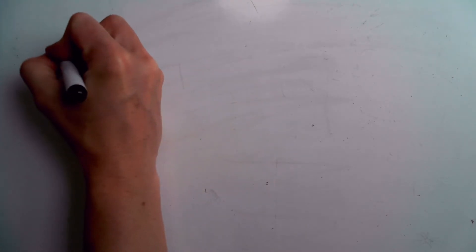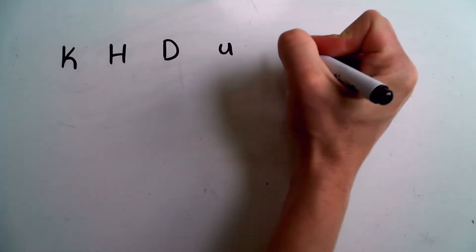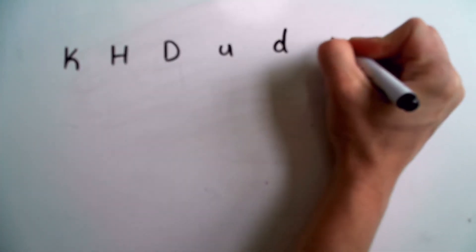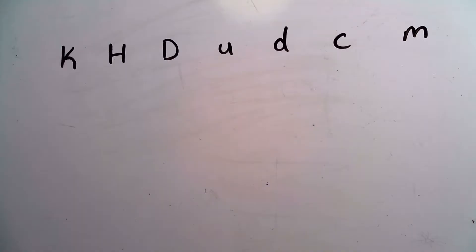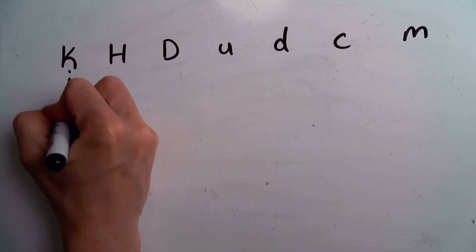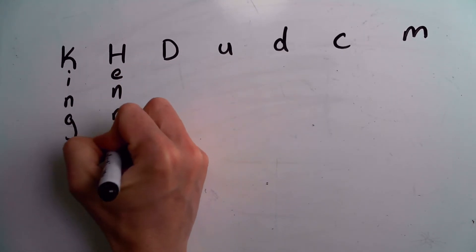I like to use a memory tool when teaching this, and the memory tool is: King Henry died unexpectedly drinking chocolate milk. I usually have kids write this on their paper with the memory tool underneath.